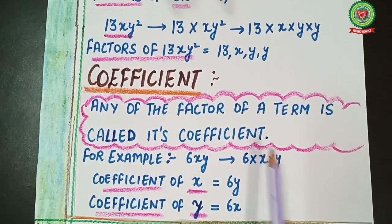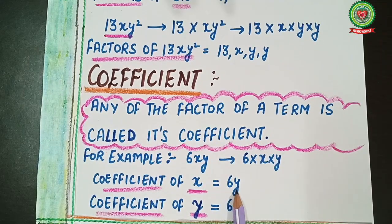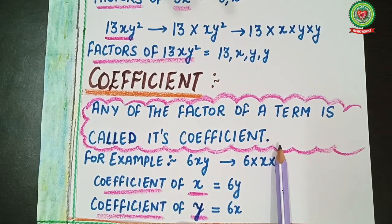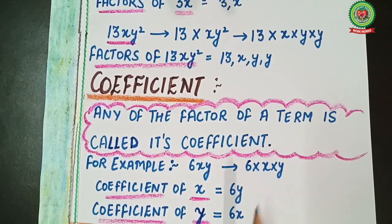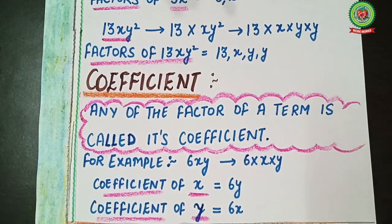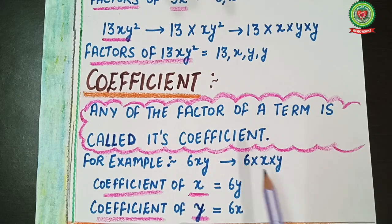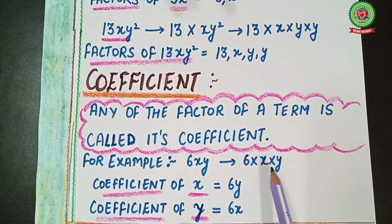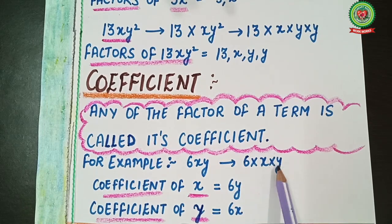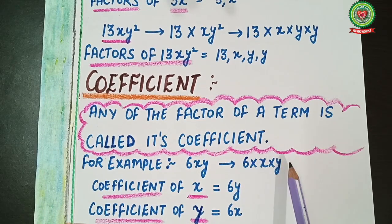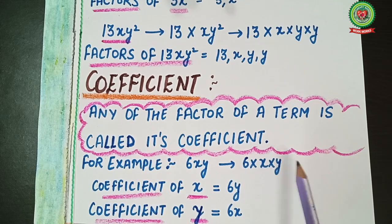Similarly, if I ask for the coefficient of y in 6xy, you hide y and what is left is 6x. So the coefficient of y is 6x. Any factor will be the coefficient of the remaining term. So 6 is a coefficient of xy, x is a coefficient of 6y, and y is a coefficient of 6x.